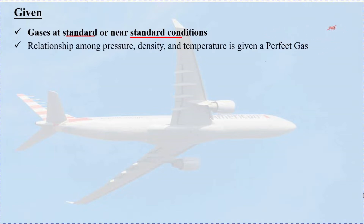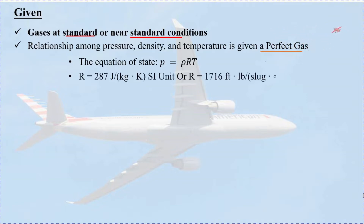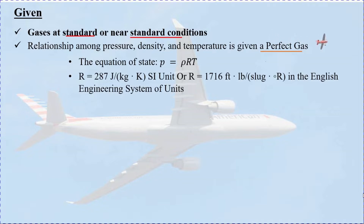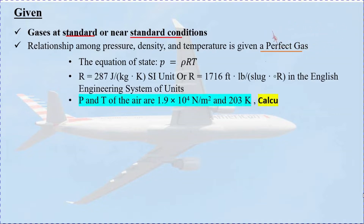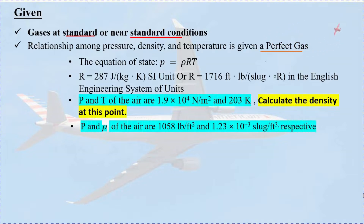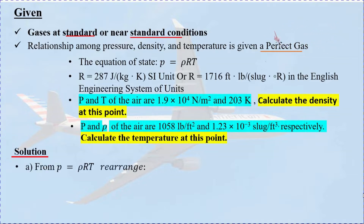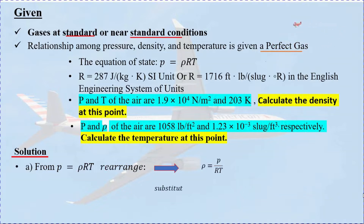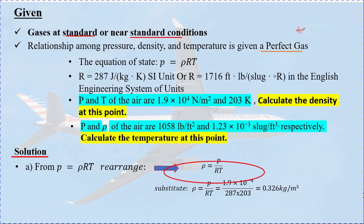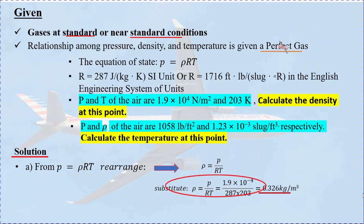For Case A, the pressure and temperature on the Boeing wing are 1.9 times 10 to the power of 4 newtons per meter squared and temperature is 203 Kelvin. Rearranging the equation to find density: density equals P divided by R times T. Substituting the numbers: density equals 1.9 times 10 to the power of 4 divided by 287 times 203, which equals 0.326 kilograms per meter cubed.